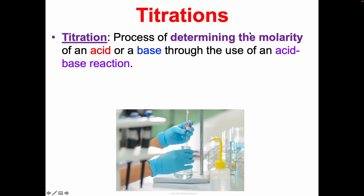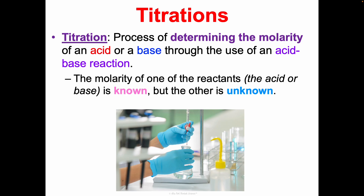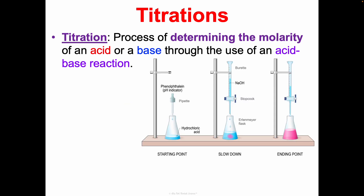The last thing to mention is titrations. A titration is a process of determining the molarity of an acid or base through the use of an acid-base reaction. You use the known molarity of one reactant to figure out the molarity of the unknown. Because acid-base reactions neutralize, you can do stoichiometry to figure out how much acid is needed to neutralize a given base, or vice versa. You'll have a solution of unknown concentration in a flask with an indicator like phenolphthalein added.